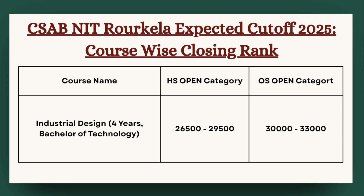Moving ahead, we have Industrial Design. For HS category, the cutoff can be expected between 26,500 to 29,500, and for OS category the cutoff can be expected between 30,000 to 33,000.